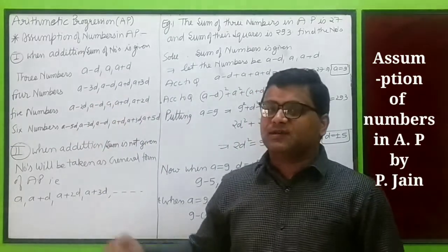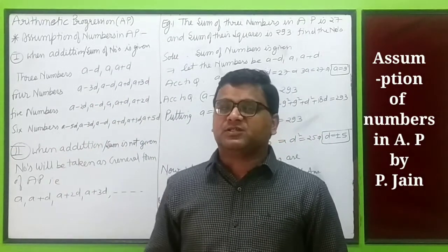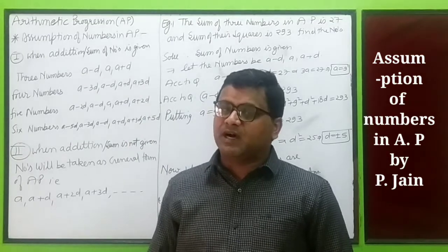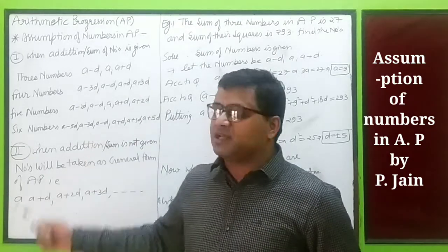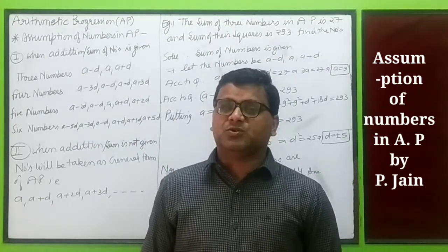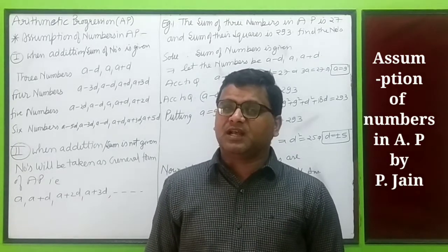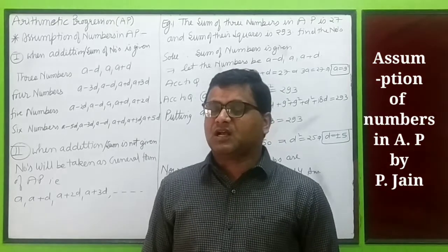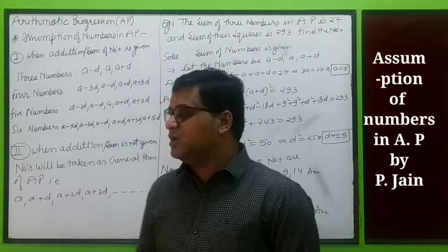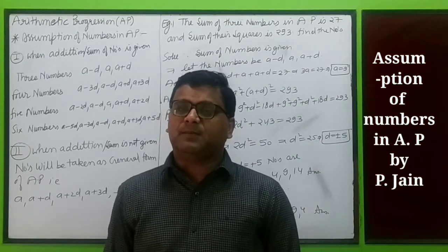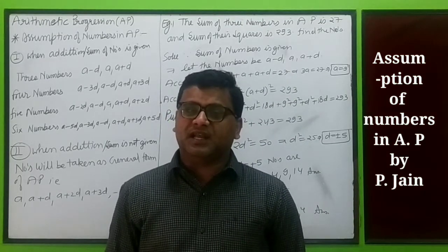When four numbers are assumed, the common difference is 2d so that when we sum, d cancels. Again when five numbers are calculated, the numbers are a minus 2d, a minus d, a, a plus d, a plus 2d. Here again the difference is d. For six numbers we assume a minus 5d, a minus 3d, a minus d, a plus d, a plus 3d, and a plus 5d.